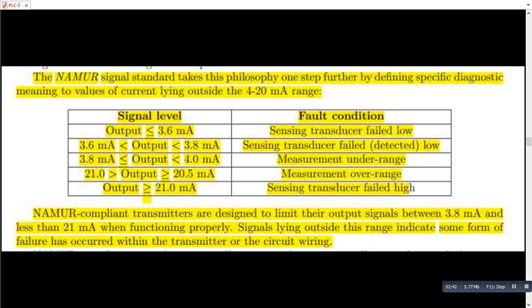So normally for the industrial control loops, we can monitor the faults by checking the current value. So if the current is less than 3.6 mA, it's sensing transducer failed low condition. And similarly if the current is in between 3.6 to 3.8 mA then it's again sensing transducer failure.